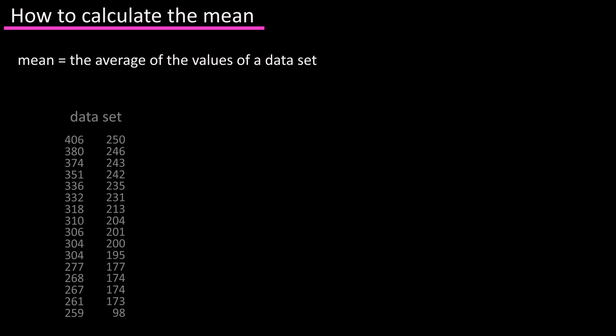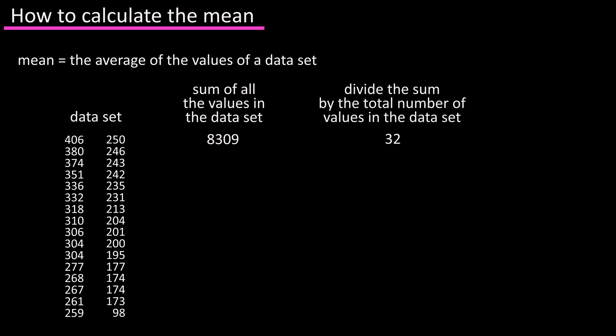The mean is the average of the values in a data set, and it is calculated by adding all of the values of a data set together, and then dividing that by the total number of values in the data set.